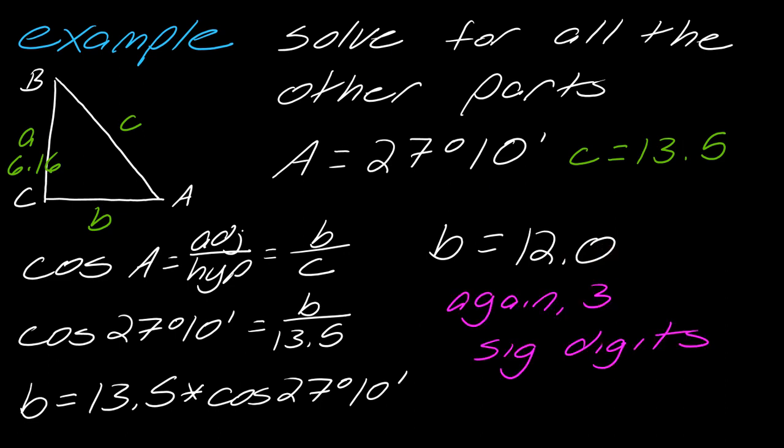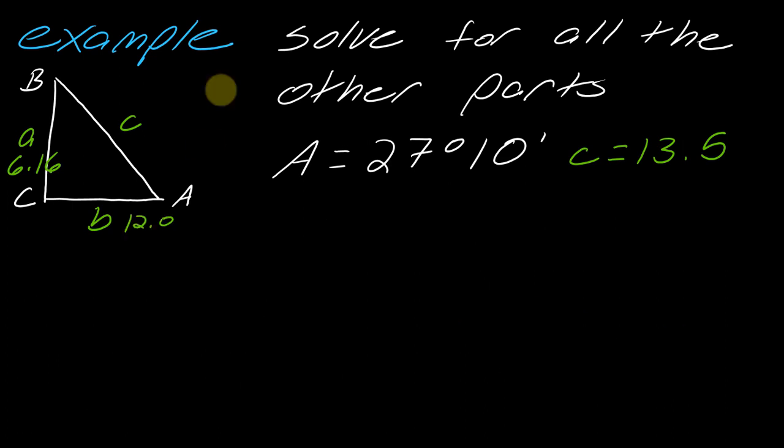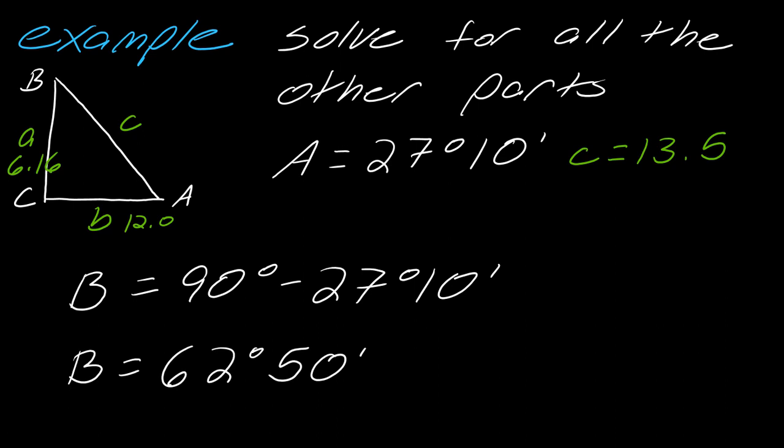Again, note the three significant digits. Now I have these two sides. I already know c and a. Now I can back into what B is. I can do 90 degrees minus 27 degrees and 10 minutes to get 62 degrees and 50 minutes. Again, notice we have the three significant digits. So we are done.